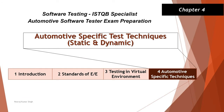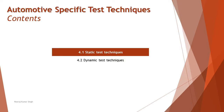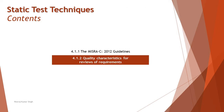Hello friends and greetings for the day. Welcome back to another tutorial on ISTQB Specialist Automotive Tester Certification. We are in chapter 4 talking about automotive specific test types — static and dynamic. As part of this, we are still in segment 4.1 static testing or static test techniques, specifically 4.1.2: quality characteristics for the reviews of requirements.